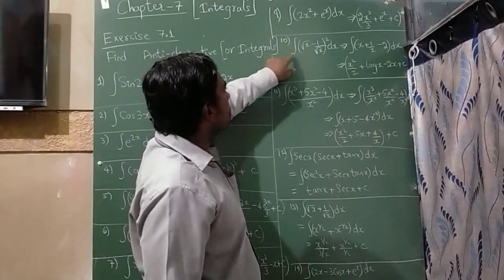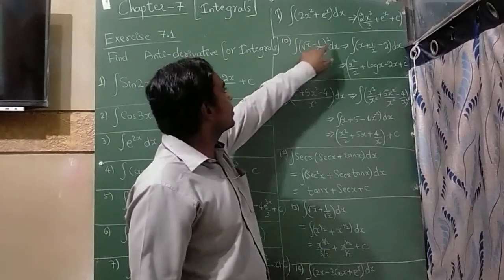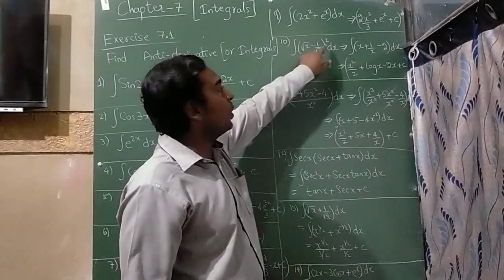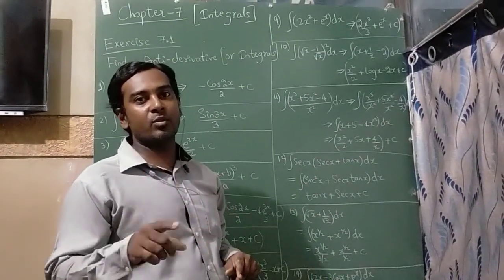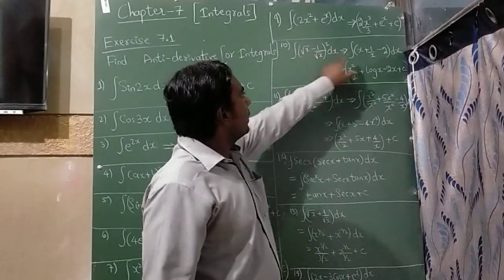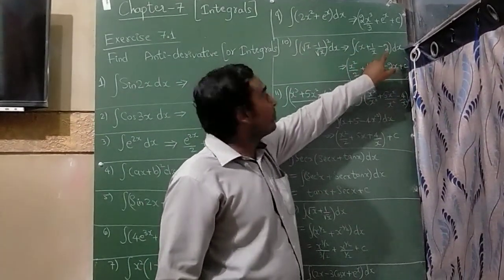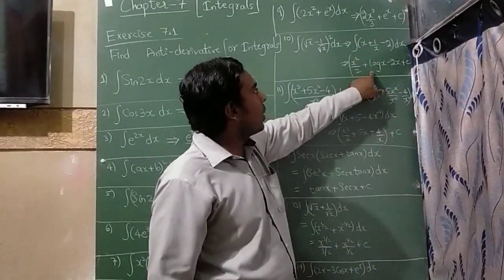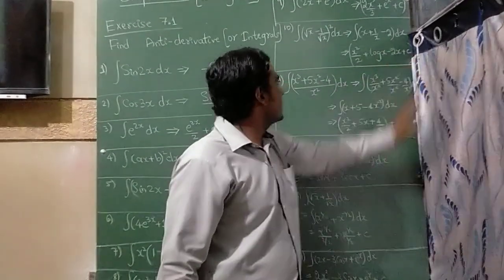The tenth question is integration of (root x minus 1 by root x) whole square. We use the (a minus b) whole square formula — a square plus b square minus 2ab — so it becomes x plus 1 by x minus 2. Integration of x is x square by 2, integration of 1 by x is log x, integration of 1 is x, plus c.